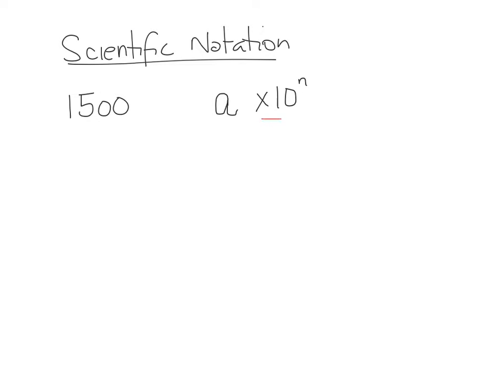The 'times 10' portion means you're moving your decimal place, and N tells you how many places you're moving it. For 1500, you can only have one number before the decimal place, so that's 1. You write 1.5 times 10, and the exponent depends on how many places you move — the decimal moves 3 spots, so it's 1.5 times 10 to the 3.